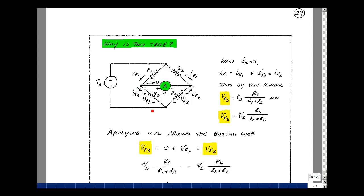The voltage across R3 is going to be the resistor R3 over R1 plus R3 times the voltage V sub s. Likewise for the voltage across R sub x, it's going to be R sub x over R2 plus R sub x times the voltage V sub s. An ideal ammeter has no voltage across it. It looks like a short circuit.